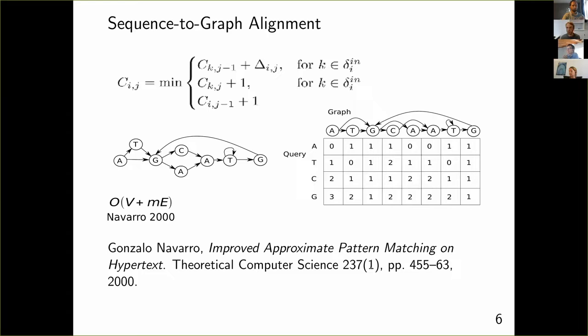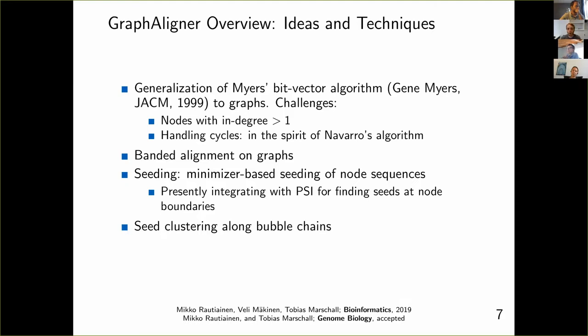Mikko's idea was to do two things: first, generalize Myers' bit-vector algorithm for sequence-to-sequence alignment to graphs, and second, figure out all the technical challenges that arise — in particular handling cycles in the spirit of Navarro's algorithm, and handling banded alignment.